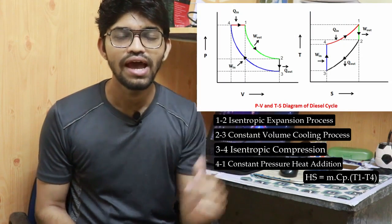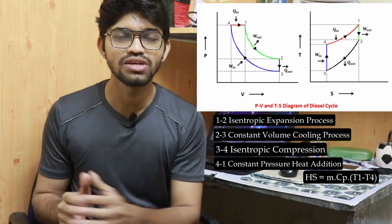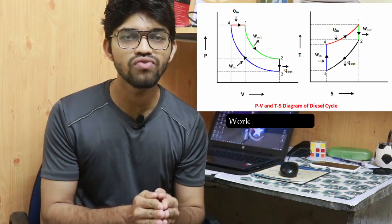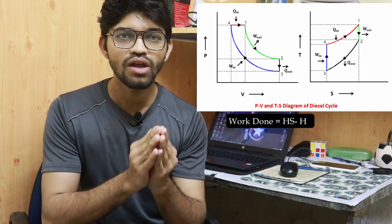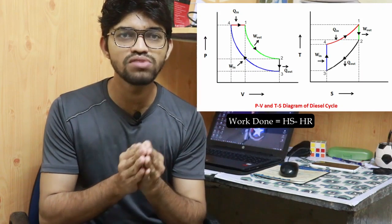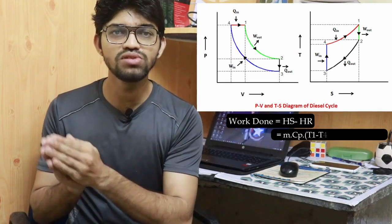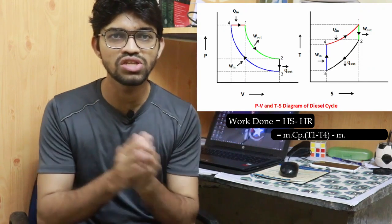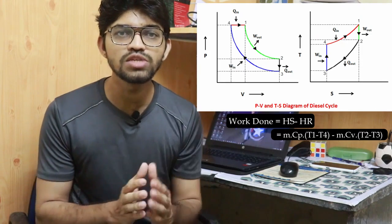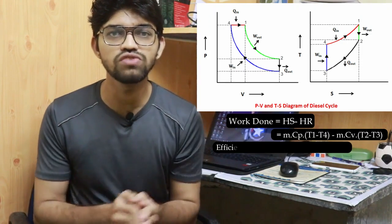Heat is added during the constant pressure process and rejected during the constant volume process. The total work done can be calculated as: W = Q_supplied - Q_rejected = m·cp·(T1 - T4) - m·cv·(T2 - T3). This is the formula to calculate the overall work done during the diesel cycle.